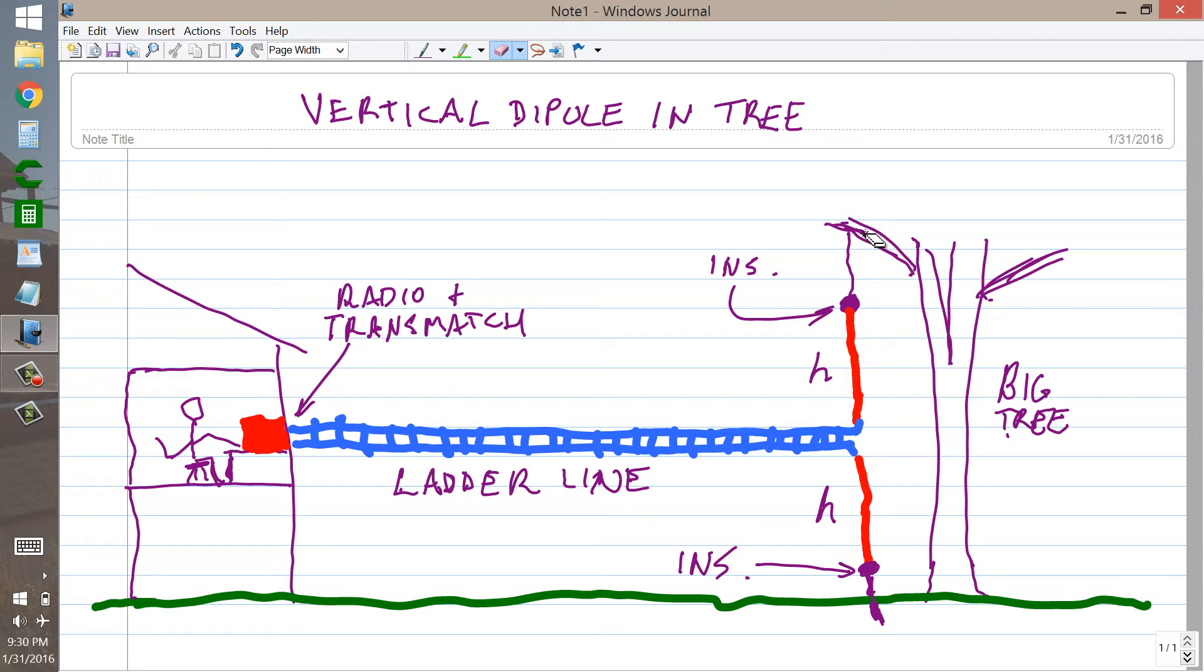to just show you a very simple vertical dipole antenna idea. If you happen to live or have your bedroom on the second story of a house, or maybe even the third story, depending on how big this tree is, and some distance from the house, a big tree